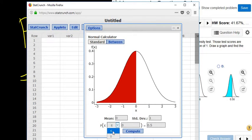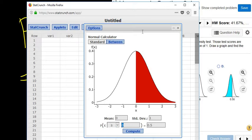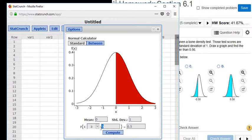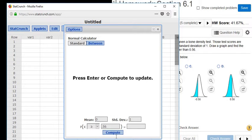And we change this to greater than, which is the same as greater than or equal to for the normal distribution, same thing. OK. And we enter a 0.56. Click Compute.